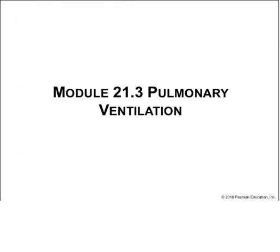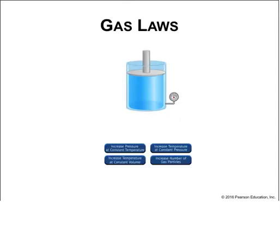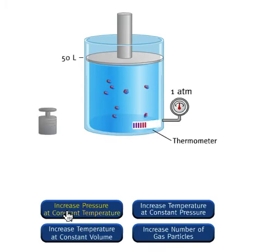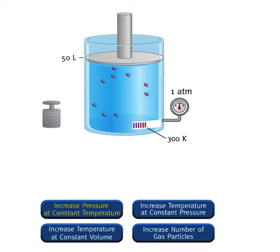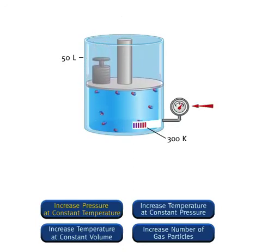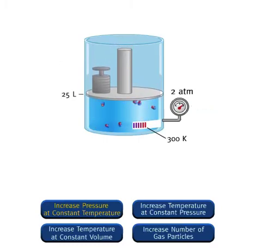Next we deal with pulmonary ventilation and the gas laws. Consider a gas-filled container with a movable piston exposed to an atmospheric pressure of one atmosphere. You can increase the pressure by adding a weight on top of the piston—adding a weight that increases pressure to two atmospheres. As the pressure on the gas increases, the volume that the gas occupies decreases, and will continue to decrease until the pressure of the gas equals the external pressure of two atmospheres. The volume occupied by the gas will be half its original volume.